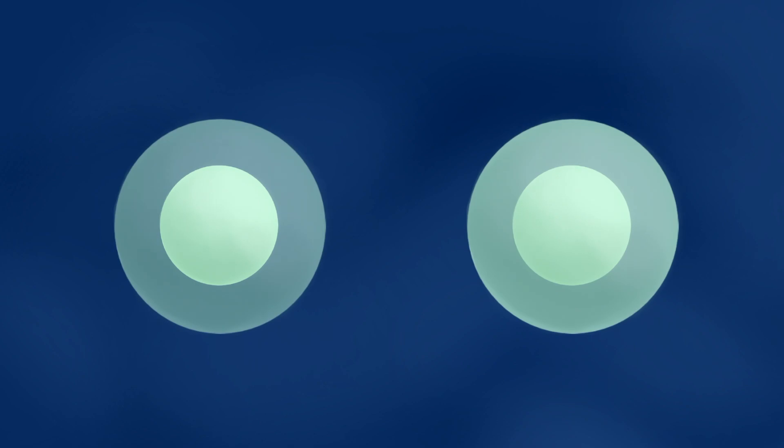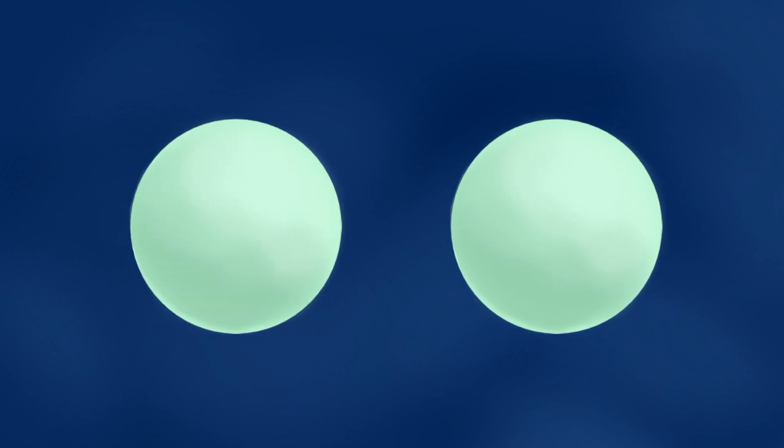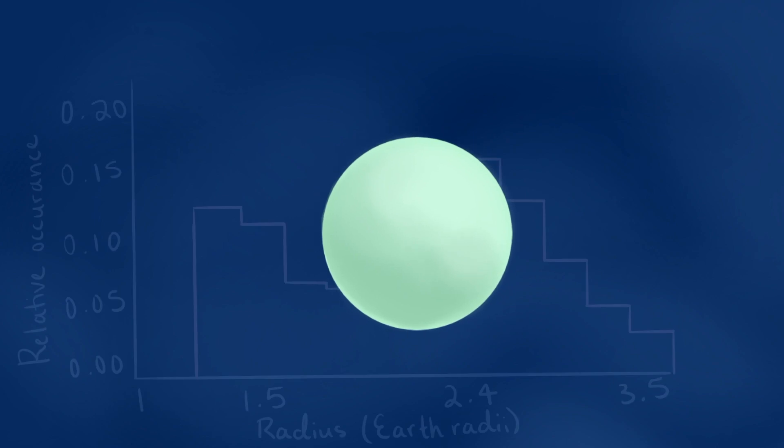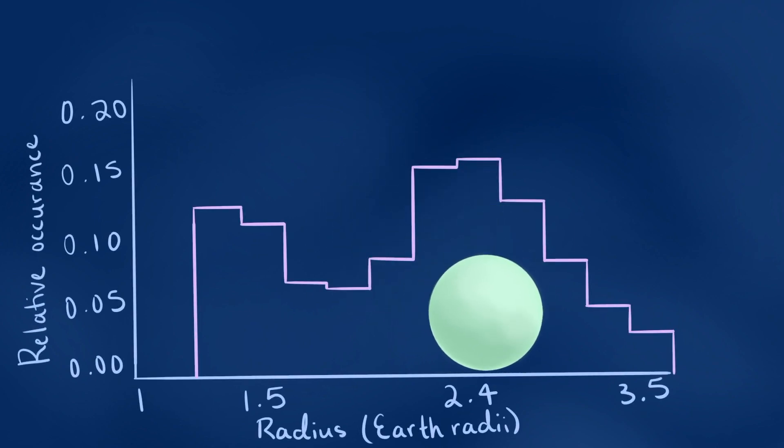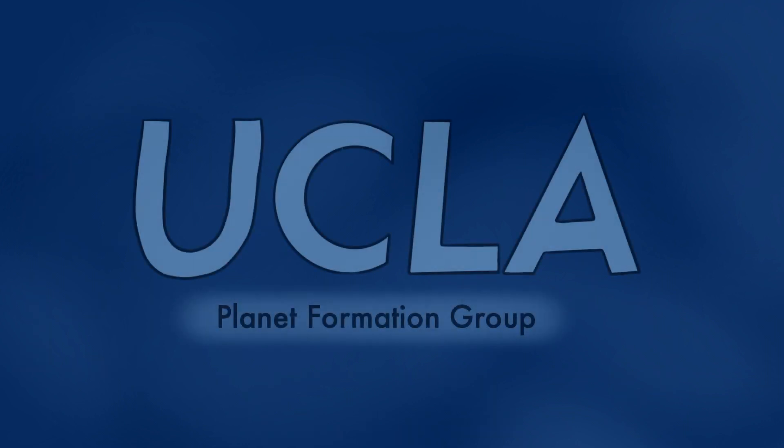Recent studies propose that the exoplanets we've been discussing, the super-earths and the sub-neptunes, started off with hydrogen helium envelopes. This means that they were all initially very similar sizes and probably would have landed on the higher end of the histogram that we plotted earlier. However, during the planetary formation and evolution process, some of the planets lost their hydrogen envelopes and hence dramatically decreased in size.